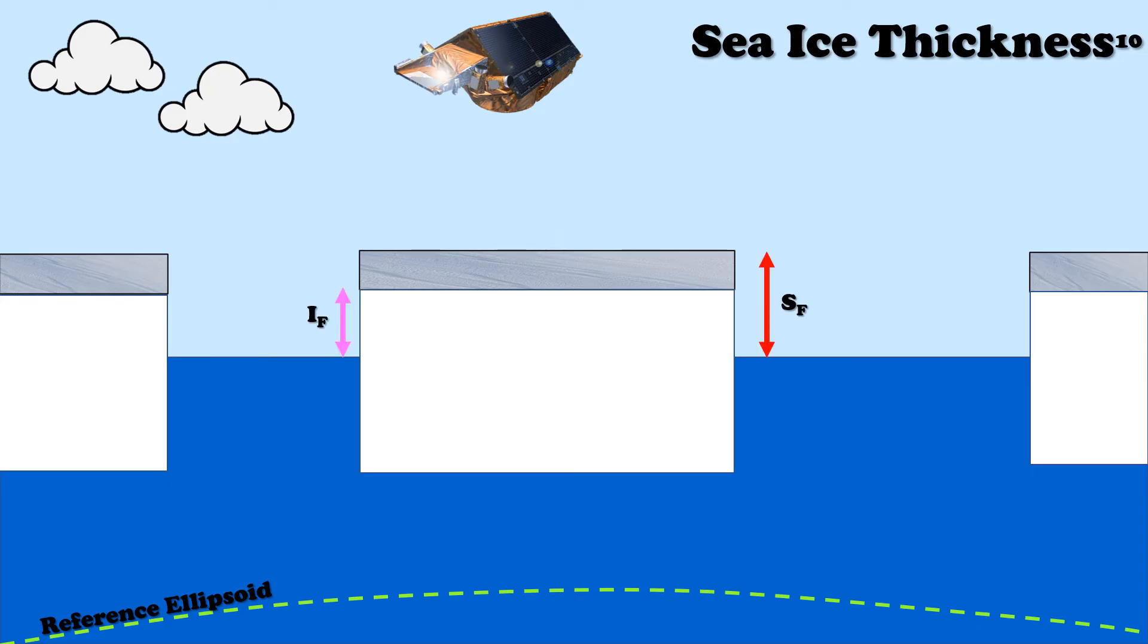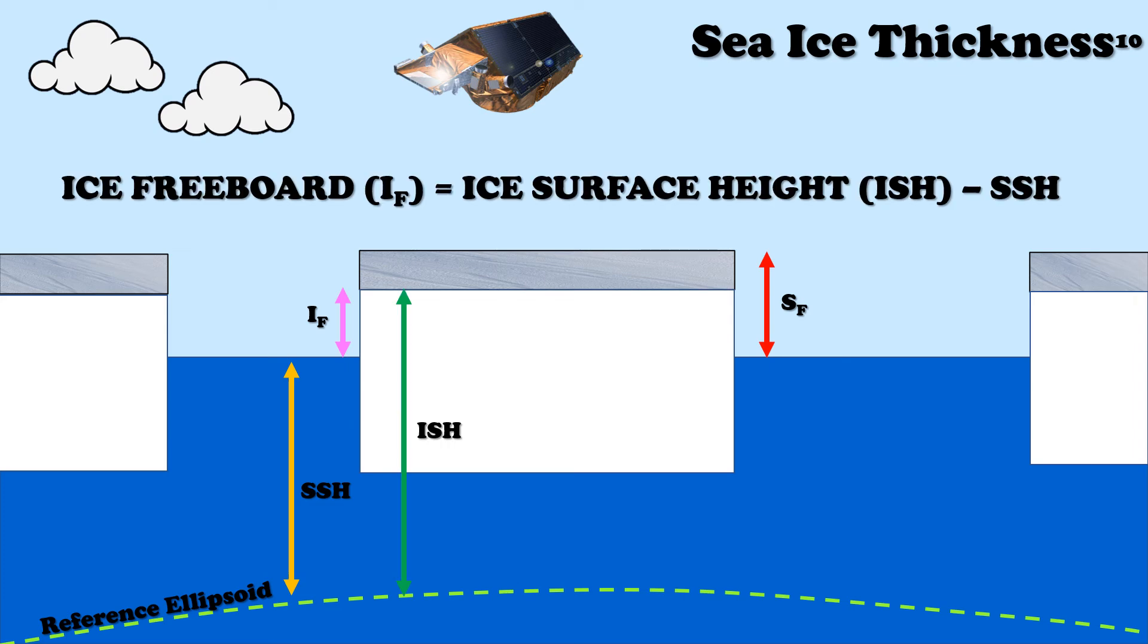Sea ice thickness can also be measured using radar altimetry to get an ice freeboard measurement. Our reference level or sea surface height is measured from leads, which are essentially large fractures in the sea ice which expose the open water. The difference between the sea surface height and the ice surface height gives us an ice freeboard measurement.